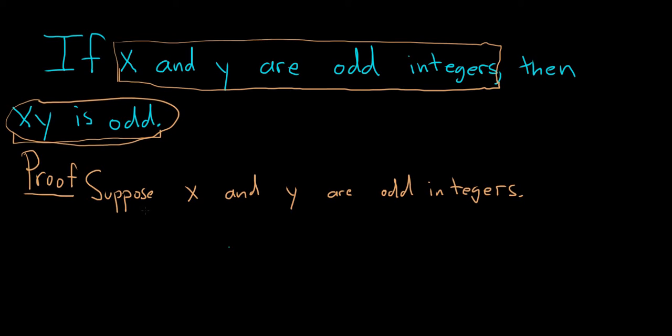So oftentimes in proofs, the next step is to just write down what you have written down means. So write down what this means, write down what it means for x and y to be odd integers.